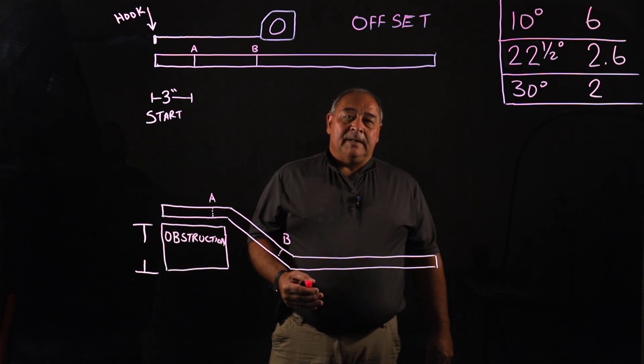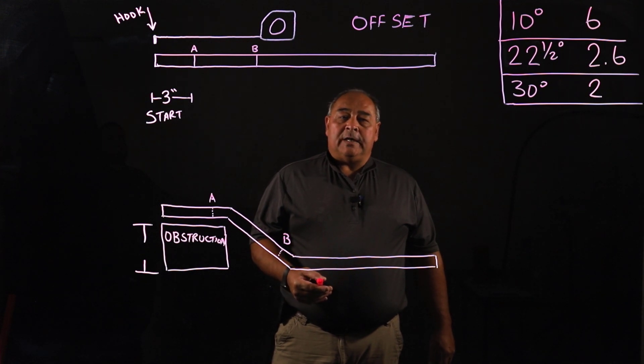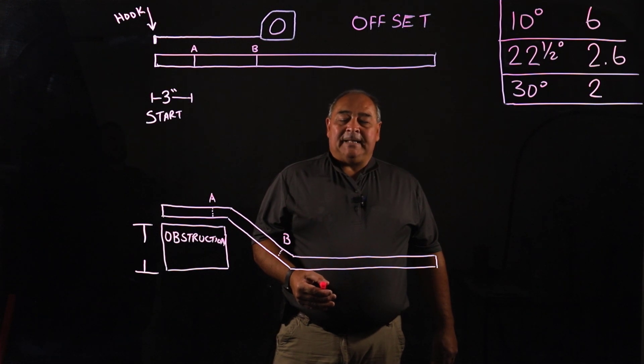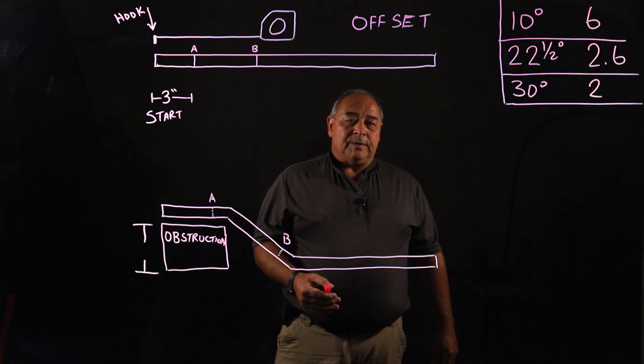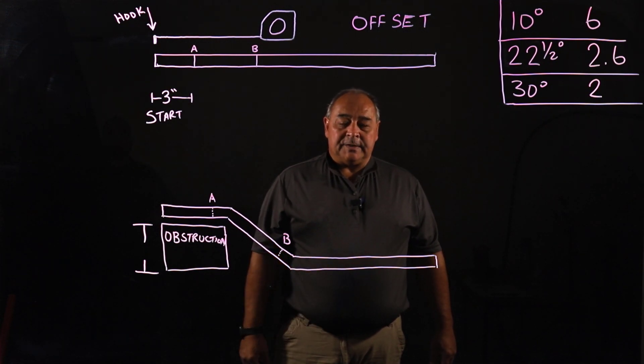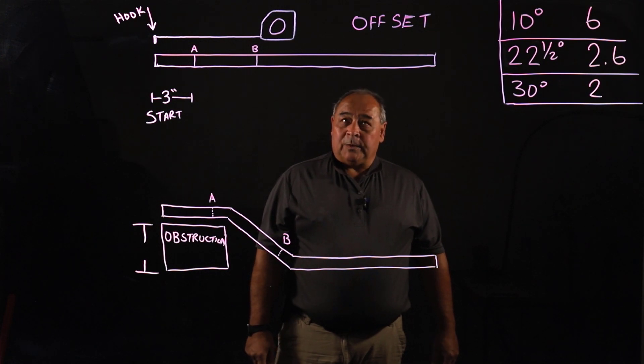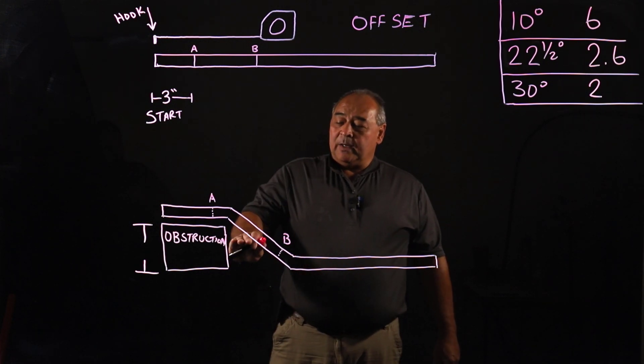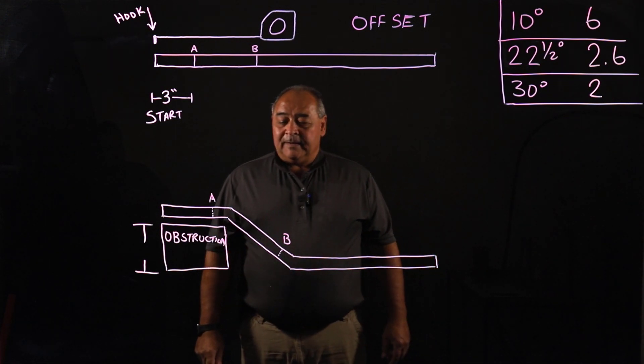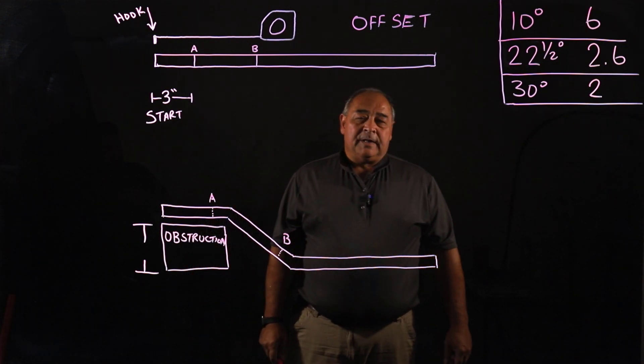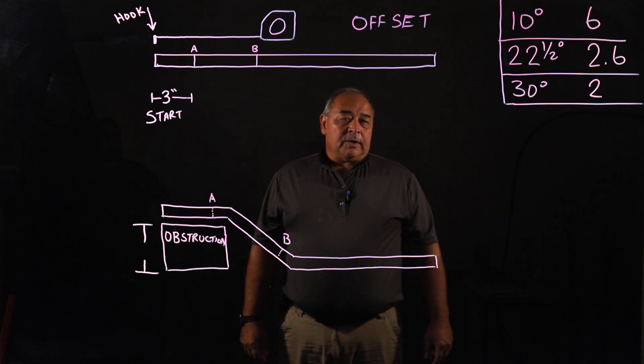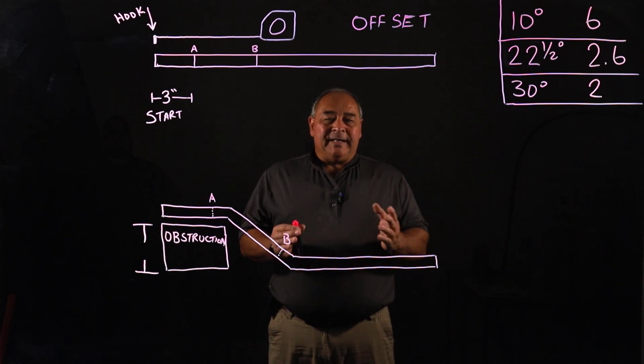One is design, and as a conduit bender you actually have a little bit of design in yourself. You get to choose what works best based on what you're trying to get the rays to equal.